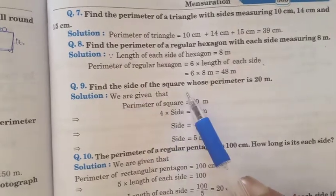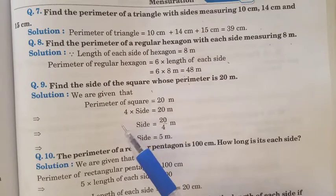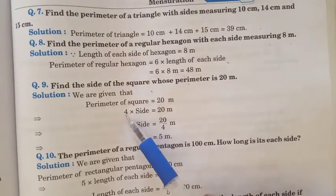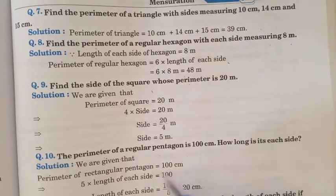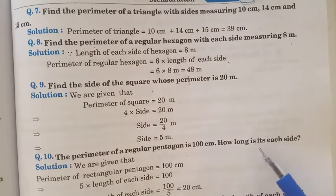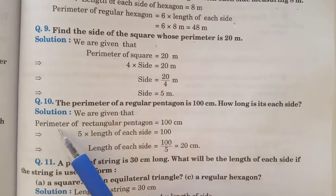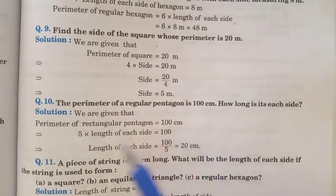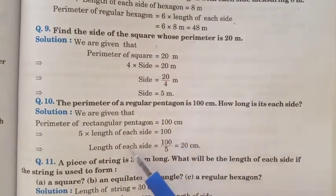Find the side of the square whose perimeter is 20 m. Perimeter of a square = 4 into side = 20, so side = 5 m. The perimeter of a regular pentagon is 100 cm. How long is each side? We are given perimeter of regular pentagon equals 100. A regular pentagon has 5 sides: 5 into side equals 100. Dividing both sides by 5, each side equals 20 cm.